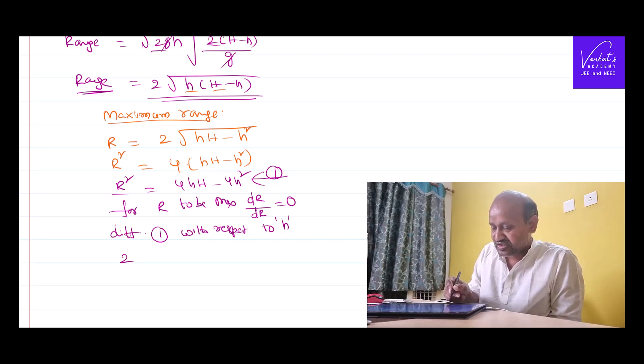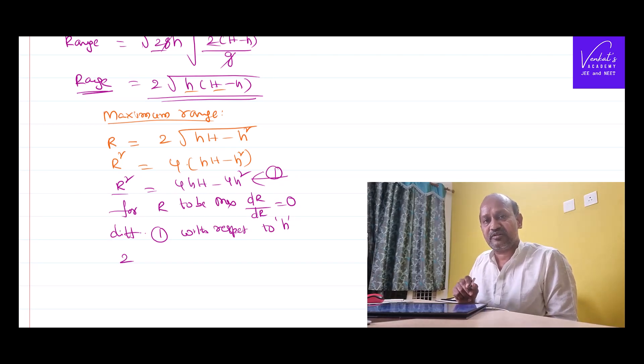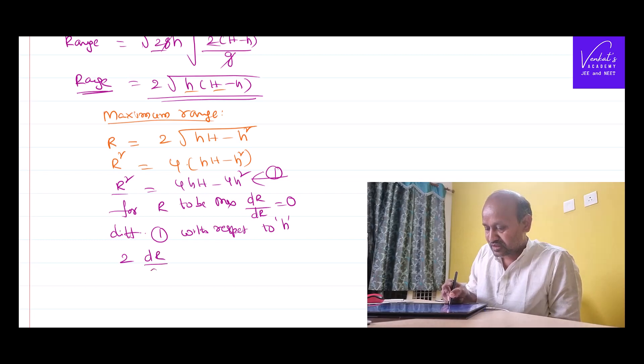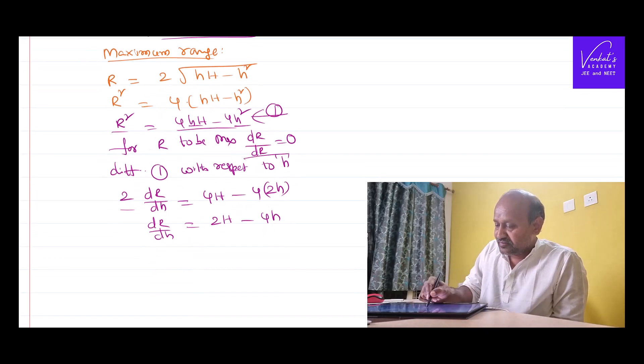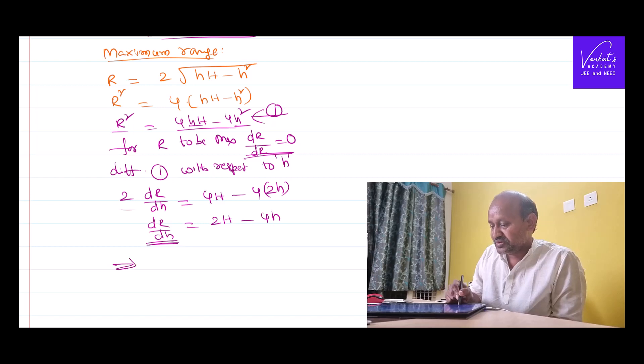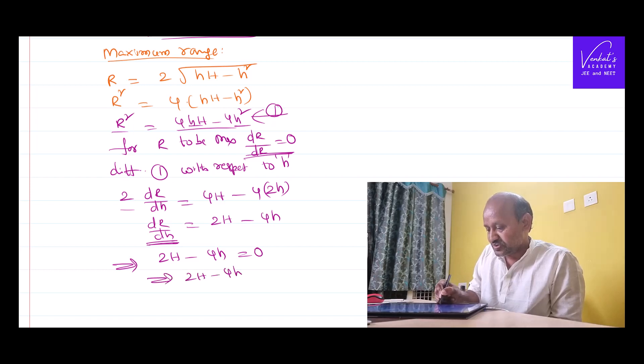Differentiate this R. Differentiation of x power n is n times x power n minus 1. That is 2 into dR by dh. For the range to become maximum, this dR by dh has to be equal to 0. That implies 2H minus 4h equal to 0. That implies 2H equals 4h. That implies small h equals capital H by 2.